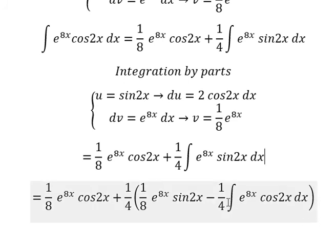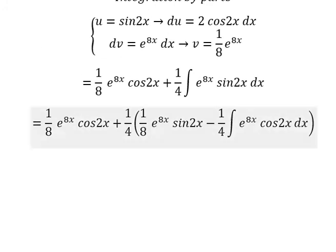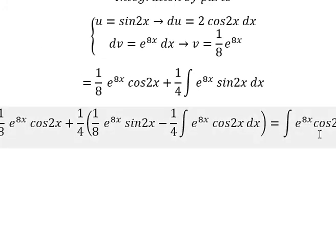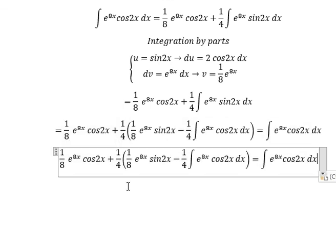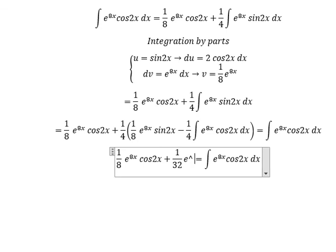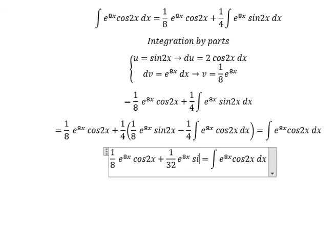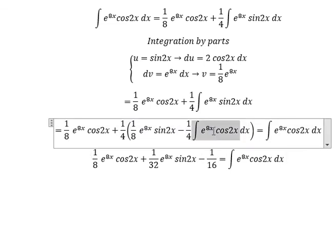Now if we look carefully at this one, this integral is similar to the original one. We need to simplify: 1/4 multiplied by 1/8 gives 1/32. So we have (1/32)·e^(8x)·sine(2x) minus 1/16, and we have the original integration appearing again here.